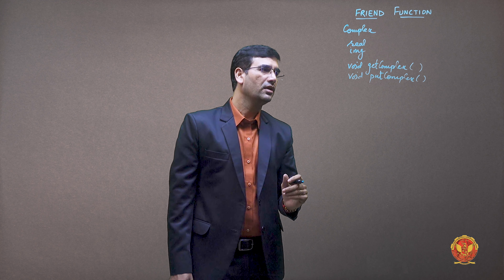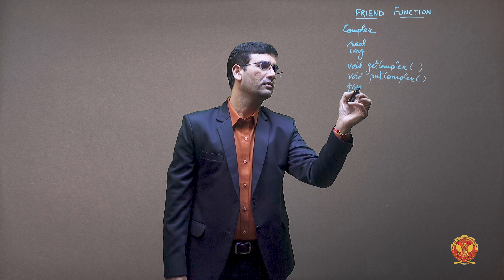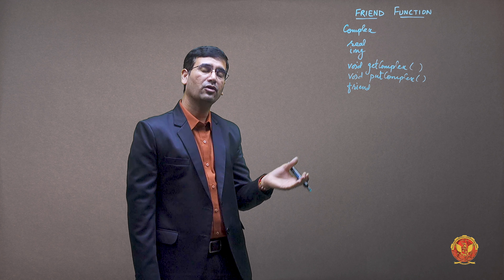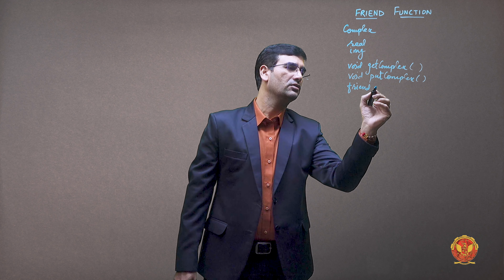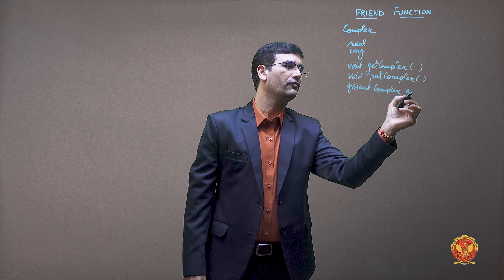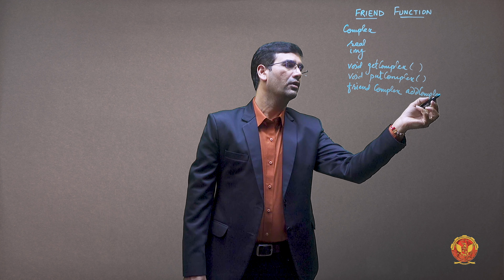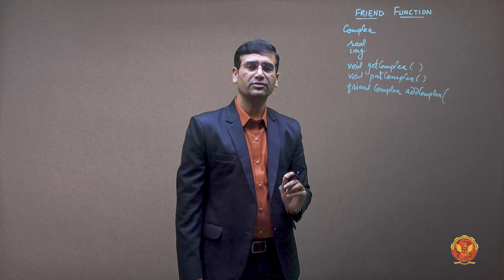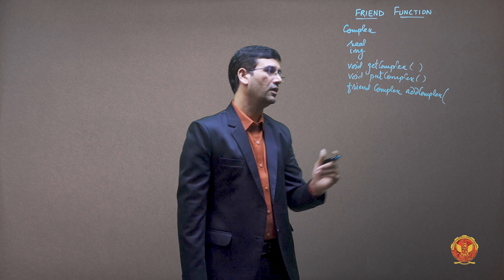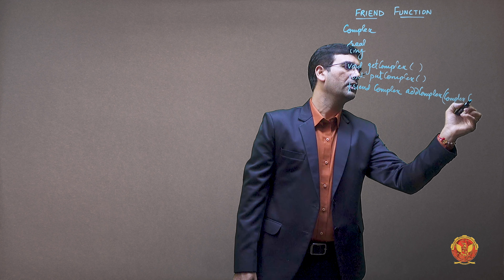Now for the friend function: first we will use the friend keyword, then the return type. Since a complex object will be returned after adding, the return type will be Complex. Then the name of the function is addComplex, and it will accept two Complex objects as arguments.